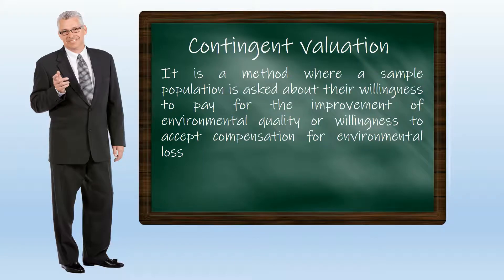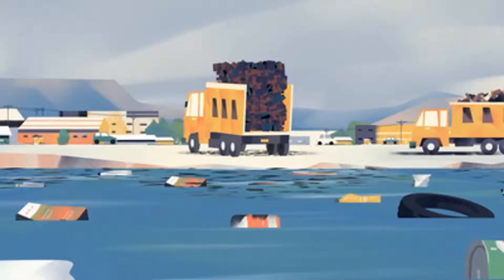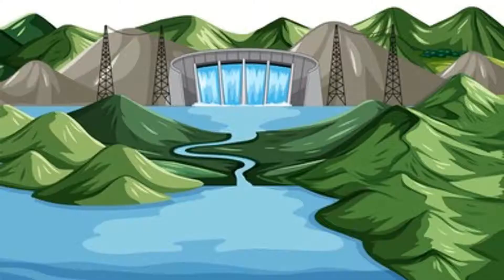For example, suppose there is waste at a shore nearby and there are people who live there. Individuals living there might be asked about their willingness to pay for the removal of that waste. Or suppose a company wants to build a dam in a wilderness area where there are animals that are valued — individuals living nearby might be asked about their willingness to accept compensation for the loss of that wilderness area, or for the displacement of the animals or the people living there.